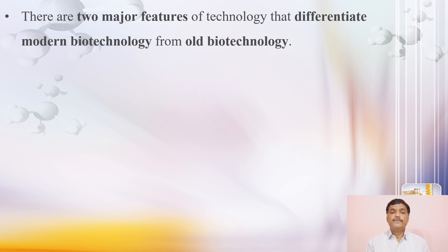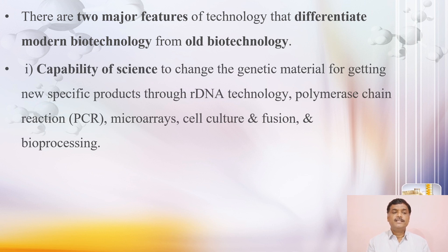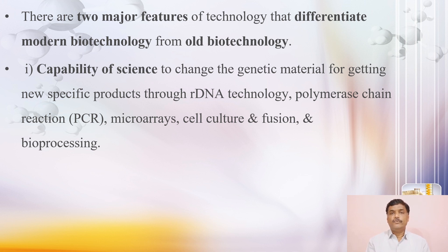There are two major features that differentiate modern biotechnology from traditional biotechnology. First is the capability of science to change genetic material for getting new specific products through recombinant DNA technology, polymerase chain reaction, microarrays, cell culture and fusion, and bioprocessing — aspects not known in old biotechnology. Second is ownership of technology and its socio-political impact, including bioprotection of products.